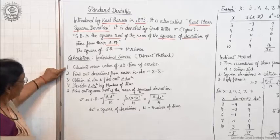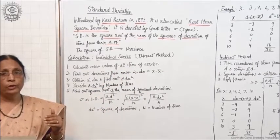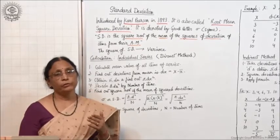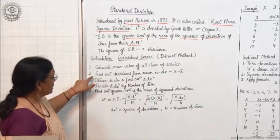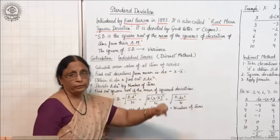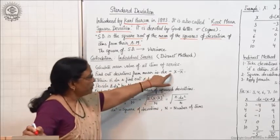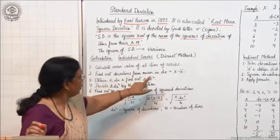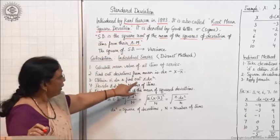What are the steps? First, calculate the mean value of all items of the series, taking into consideration all items and finding the actual mean value. Second, find out deviations from the mean — that is, dx equals x minus x-bar. Deviations are always taken from the actual mean value. Third, obtain sigma dx, then find out sigma dx squared, because it is square deviation.